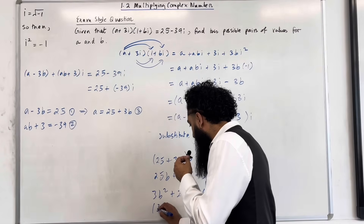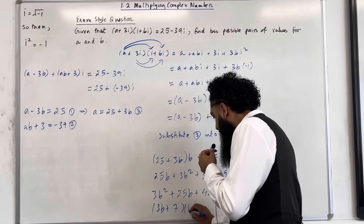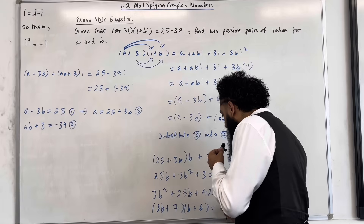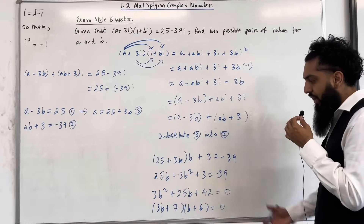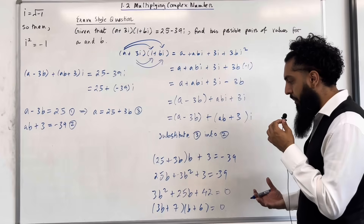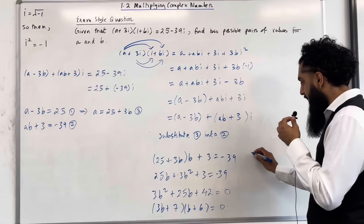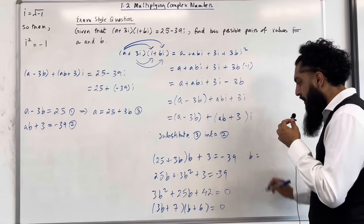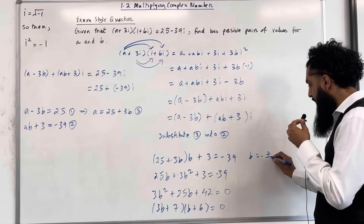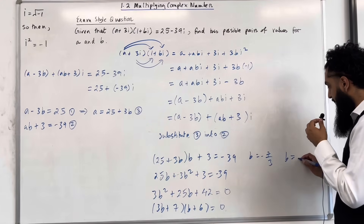Factorizing this, I get (3b + 7)(b + 6) equals 0. Setting each bracket equal to 0 and solving for b, I get b equals minus 7 over 3, and b equals minus 6.